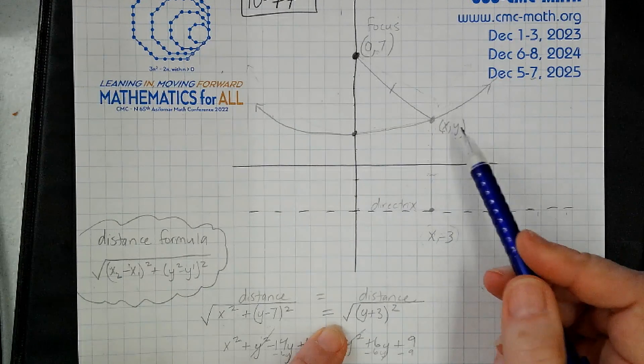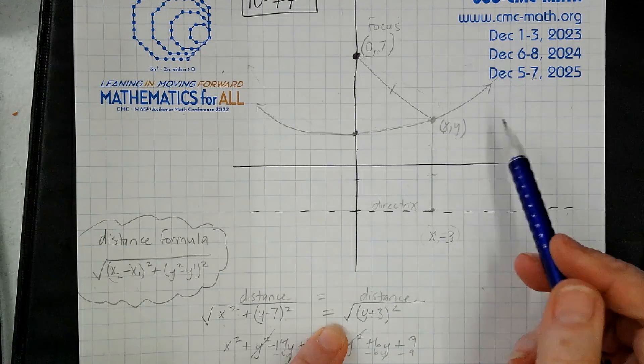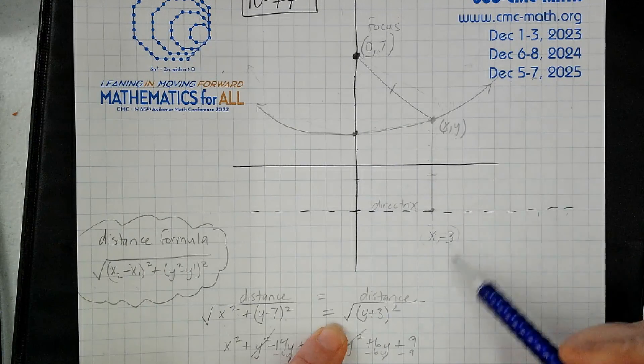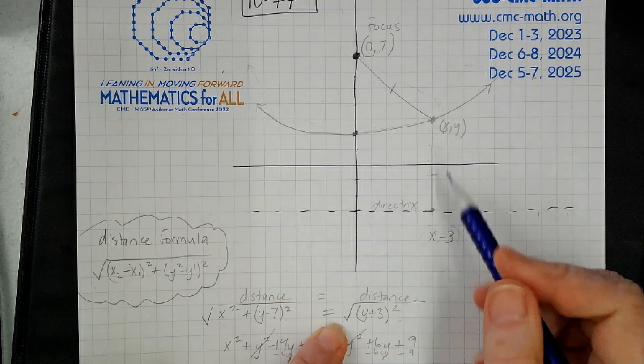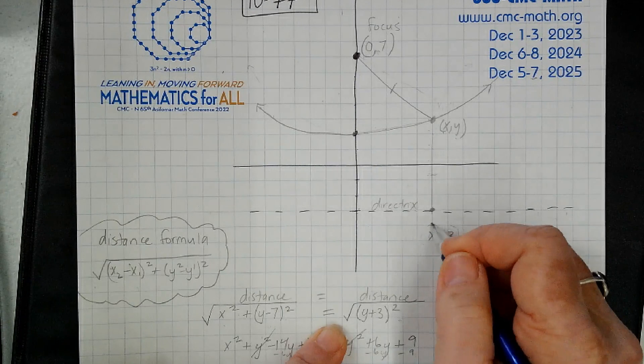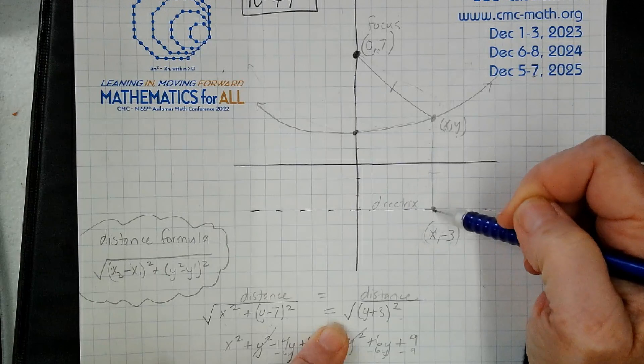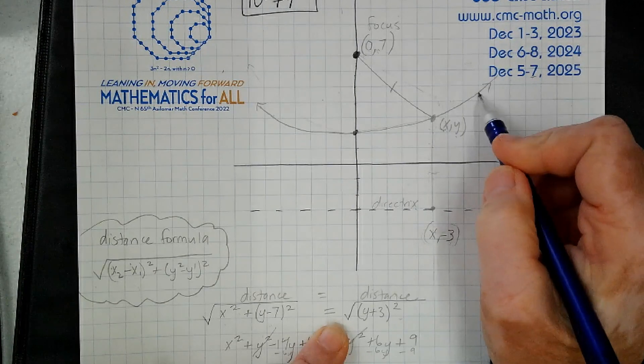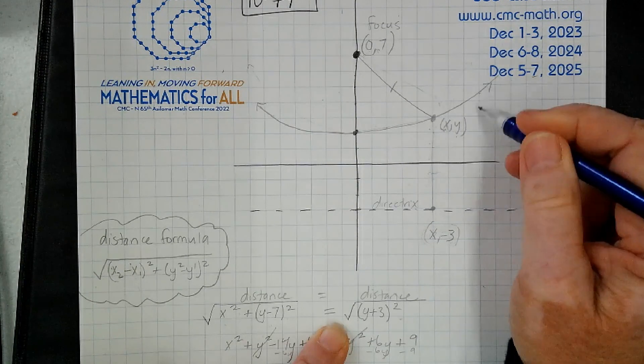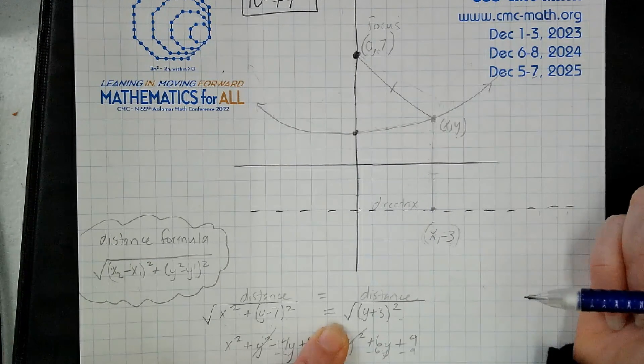x₂ minus x₁, well x minus x is 0 squared, so I just didn't even write it there. And then y₂ minus y₁, so that's y minus negative 3, but if you minus negative 3 it's plus 3. How did I know this? Well, I knew that this ordered pair right here was (x, -3) because it has to be perpendicular. The distance from my parabola to my directrix is going to make a perpendicular with the directrix, that's the shortest distance I can get. So if this is x, then right directly below it also has to be x, and this is negative 3.